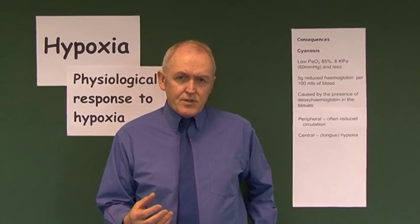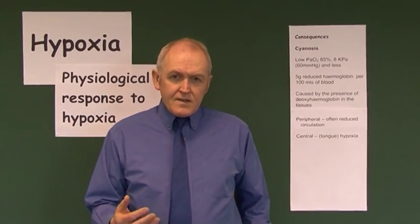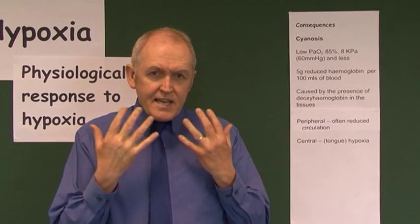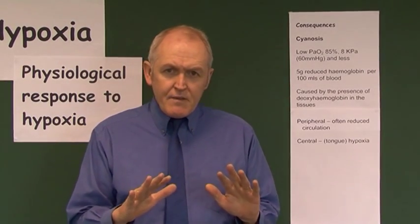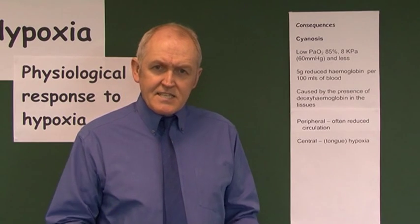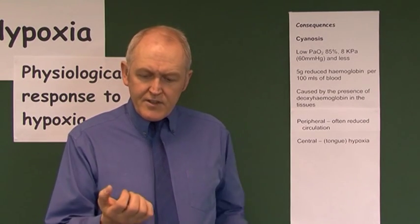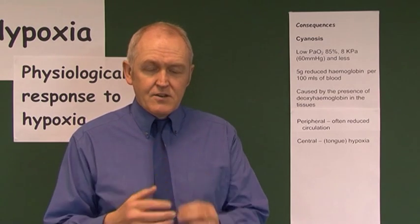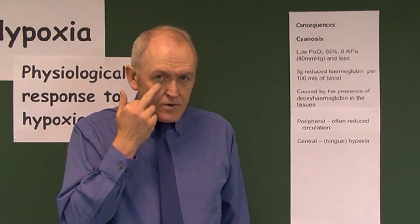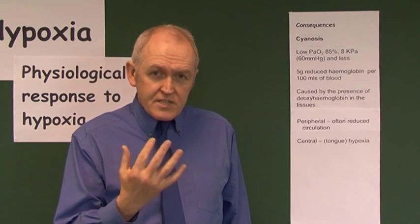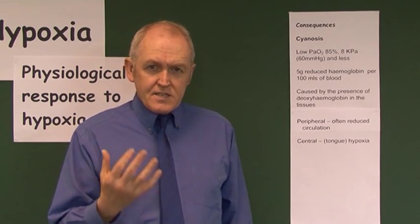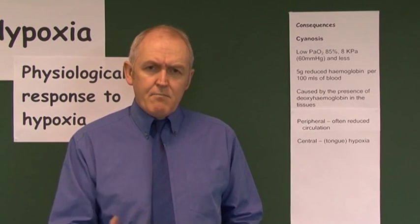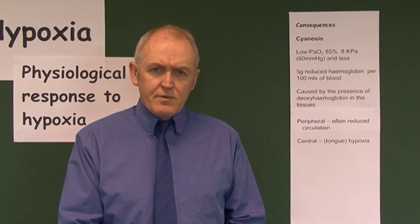Cyanosis describes the bluish-tinted discoloration seen in skin and mucous membranes. It's fairly easy to recognize in white people through the skin, but in people with darker skins it takes more training. We have to look at things like fingernail beds — are they pink or cyanosed? The colour of the lips, mucous membranes, and tongue are all very indicative. You'll get the same cyanosing effect in these areas in black people as in white people.